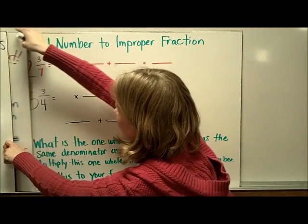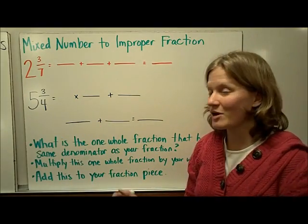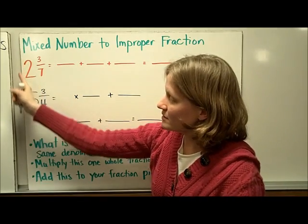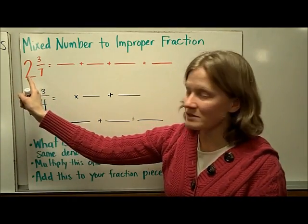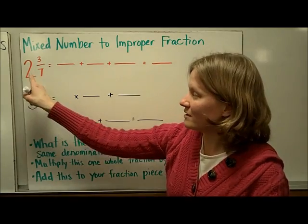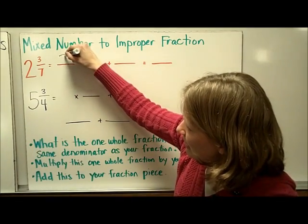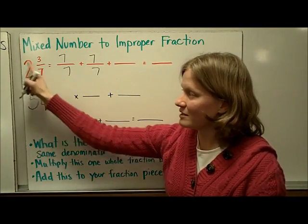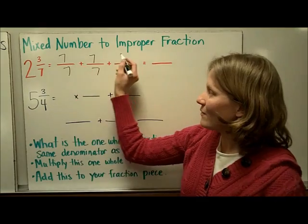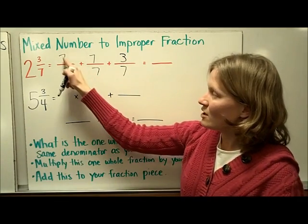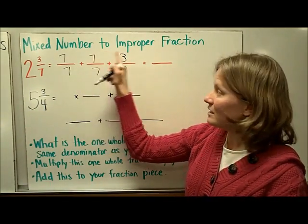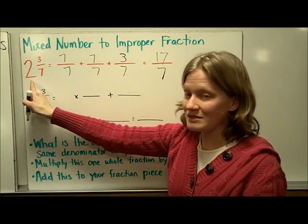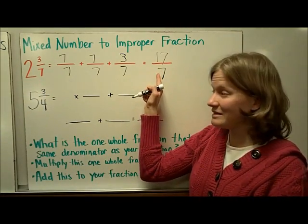Now sometimes you have to go the opposite way — sometimes you have to turn mixed numbers into improper fractions. You can think about the 2 wholes using the same denominator as the fraction. So I'm going to think about one whole and another one whole — I wrote 7 sevenths twice because my whole number was 2 — and then I have the fraction piece 3 sevenths left over. 7 plus 7 is 14, 15, 16, 17. So 2 and 3 sevenths written as an improper fraction is 17 sevenths.